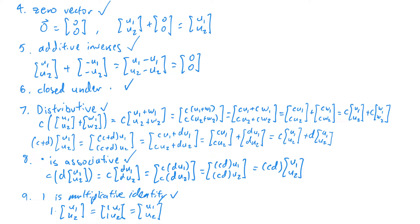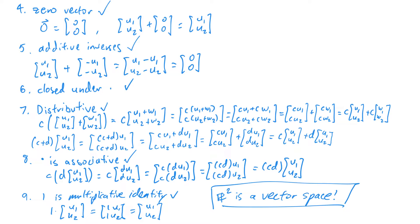Since R² satisfies all of these conditions, we can conclude that R² is a vector space. Because there are so many properties to check, it's usually tedious to verify a vector space, but it's good to see once. For the other examples I'll give, you can take my word that they're vector spaces, or verify the properties yourself. It's important to note that the operations of vector addition and scalar multiplication play a role in deciding whether something is a vector space.